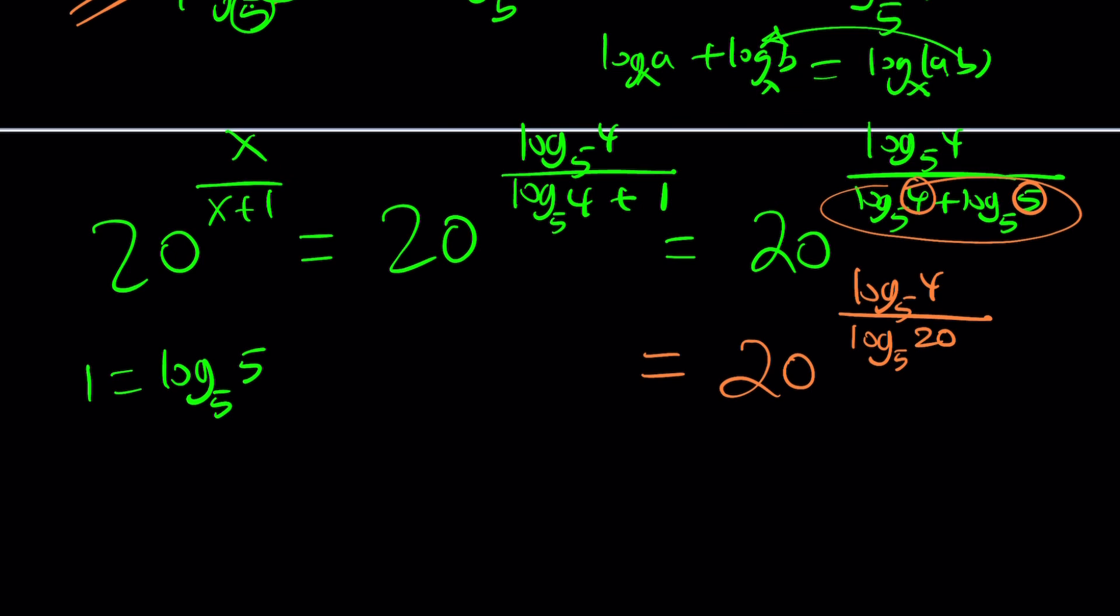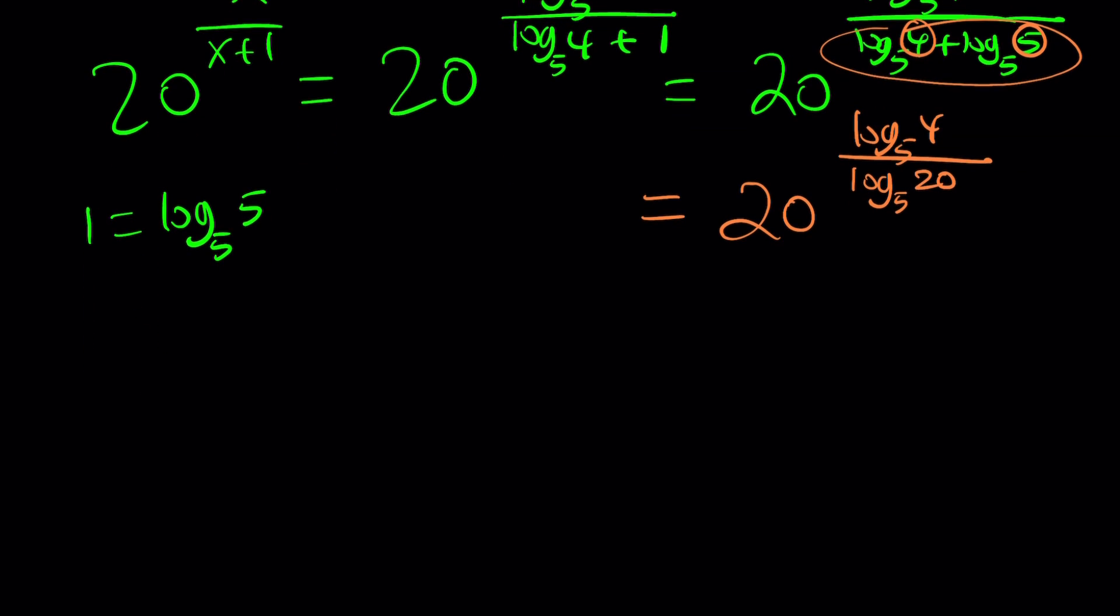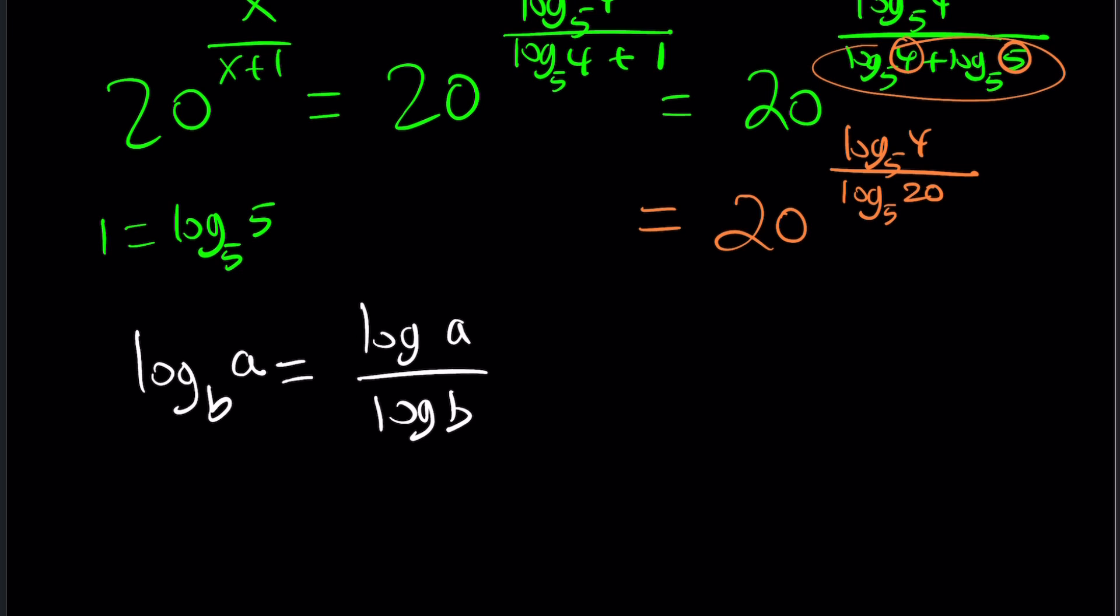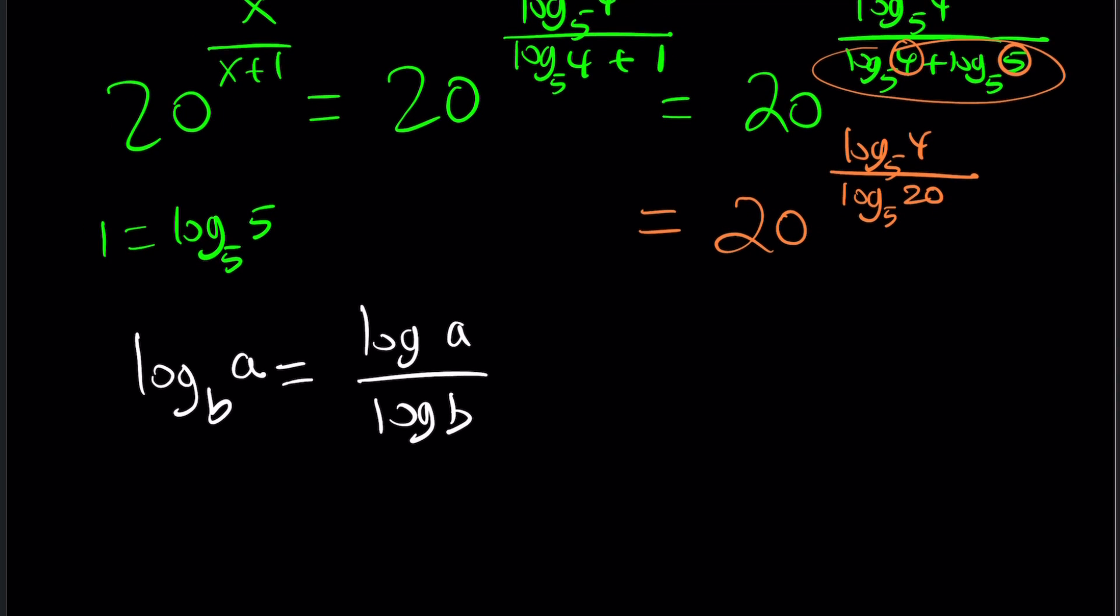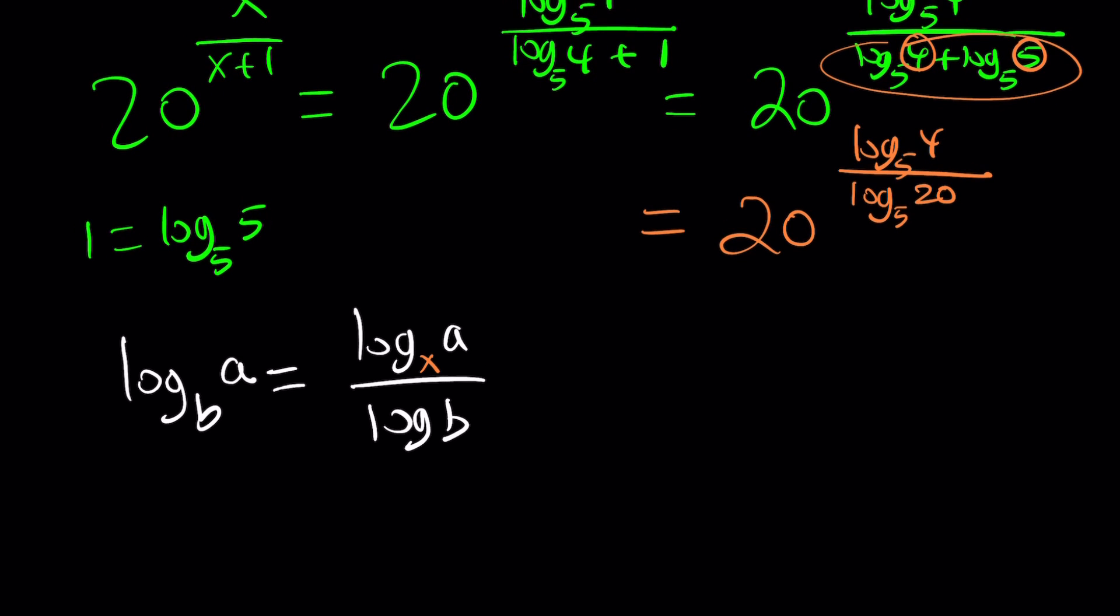Now, another property of logs come into play here, which is called change of base. How does change of base work? Let me show you. Change of base works like this. If you have log a with base b, then you can write it as log a over log b. The base doesn't matter as long as you use the same base. So I'm just going to put a little x here for the common base because they have to have the same base. That's how you do it.